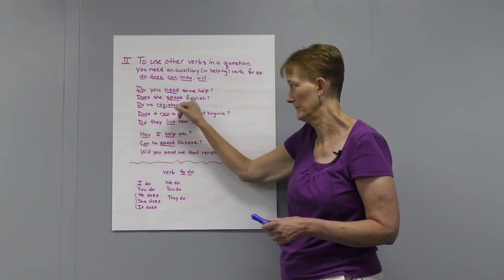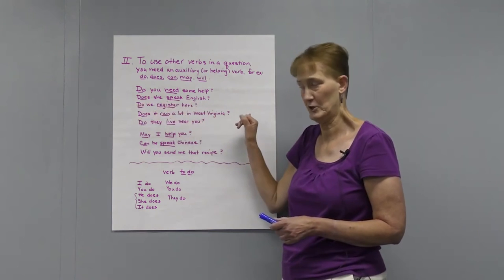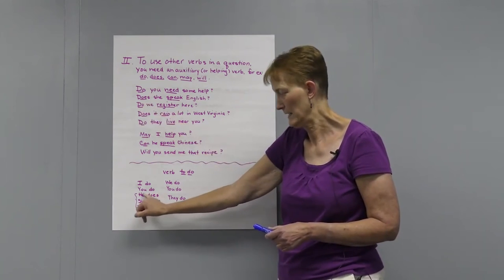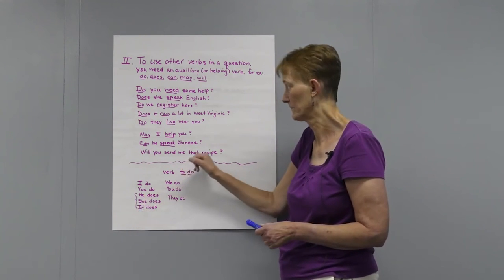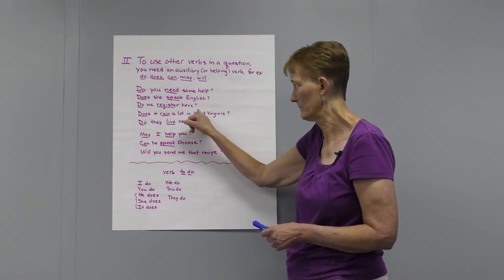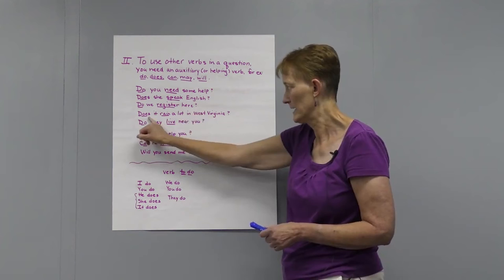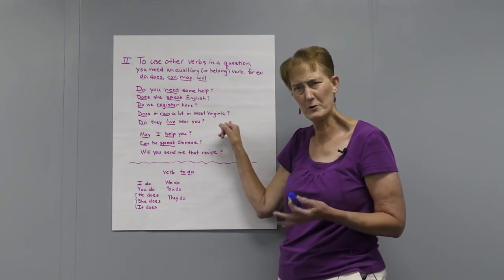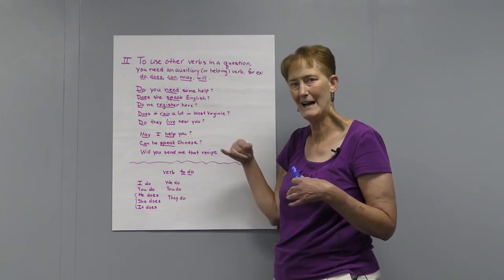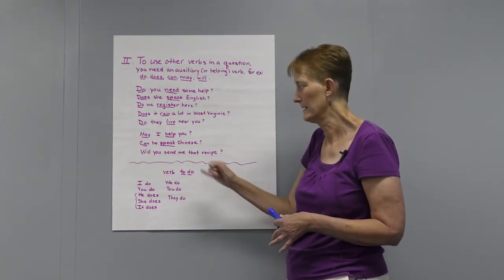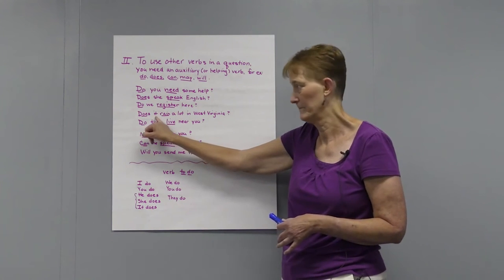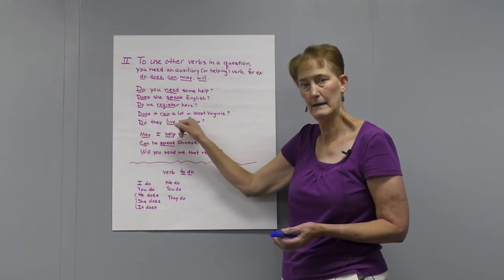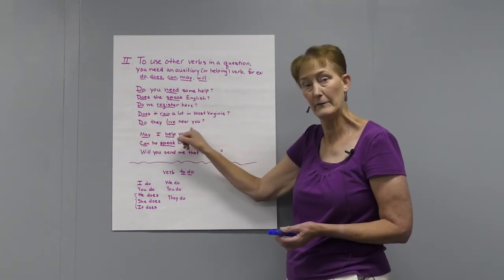Does she speak English? Here it's 'does' because you have to use 'does' with he, she, or it. Do we register here? Does it rain a lot in West Virginia? When you're talking about not a person but just an idea or a thing or a place, then you want to use the word 'it.' So: Does it rain a lot in West Virginia? Do they live near you?